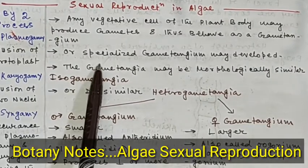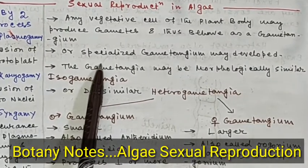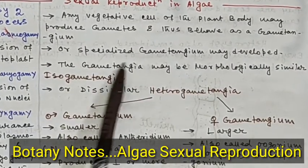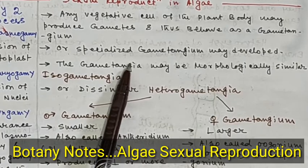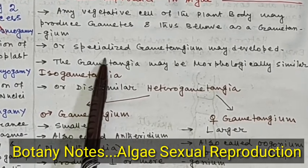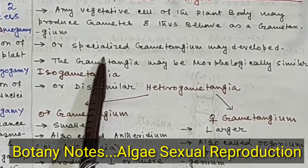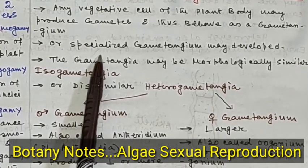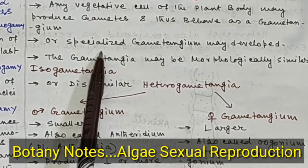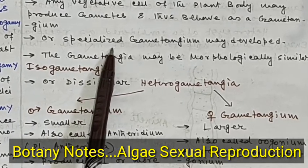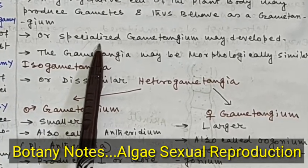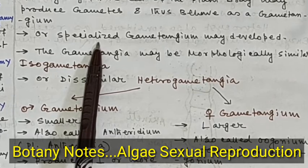Welcome students. We are talking about the nodes on algae. In the previous lecture video I discussed the general features of algae, the range of thallus structure, and the reproductive procedures of algae — mainly vegetative reproduction and asexual reproduction.